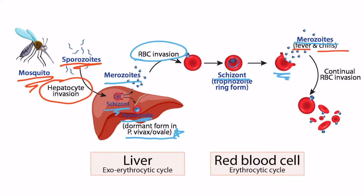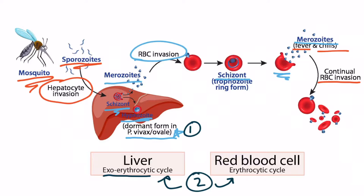These merozoites can then go and infect more red blood cells. Having a basic understanding of the life cycle is helpful, but there are really only three items you need to commit to memory: first, hypnozoites are related to Plasmodium vivax and ovale; second, the liver and the red blood cells are infected — the exoerythrocytic cycle and the erythrocytic cycle respectively; and third, different species burst at different intervals, resulting in fever and chills — every two days, every three days, or irregularly.